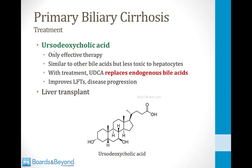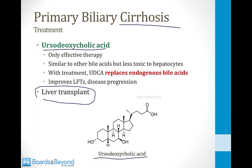Most patients with this condition ultimately develop cirrhosis — that's why it has the word cirrhosis in the name — and ultimately they require a liver transplant. However, there is one medical therapy called ursodeoxycholic acid. It has a very similar structure to other bile acids but is less toxic to hepatocytes. With treatment over time, the ursodeoxycholic acid replaces many of the endogenous bile acids and causes less liver damage. Clinical trials have shown it improves liver function tests and slows the rate of disease progression.